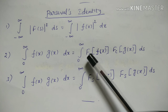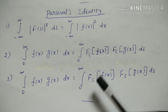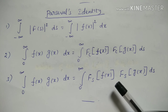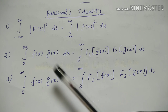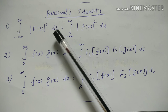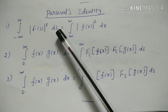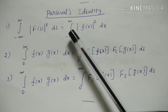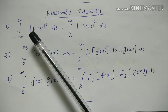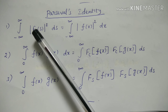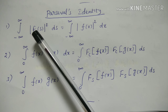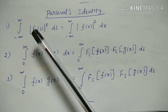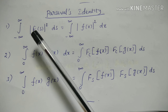In the second formula, the cosine transform is used, denoted with suffix C. In the third formula, the Fourier cosine transform is written with suffix C, and the Fourier sine transform is written with suffix S.